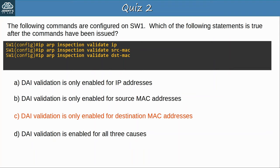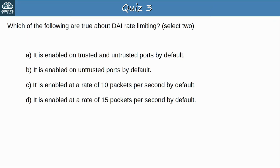Question 3: Which of the following are true about DAI rate limiting? Select 2. The answers are B — it is enabled on untrusted ports by default — and D — it is enabled at a rate of 15 packets per second by default. Unlike DHCP snooping rate limiting, DAI rate limiting is enabled at 15 packets per second on all untrusted ports by default. Another difference is that DAI allows you to configure a burst interval, so the rate limit can be calculated as, for example, 50 packets over 3 seconds. DHCP snooping only allows you to configure the packet rate per 1 second.